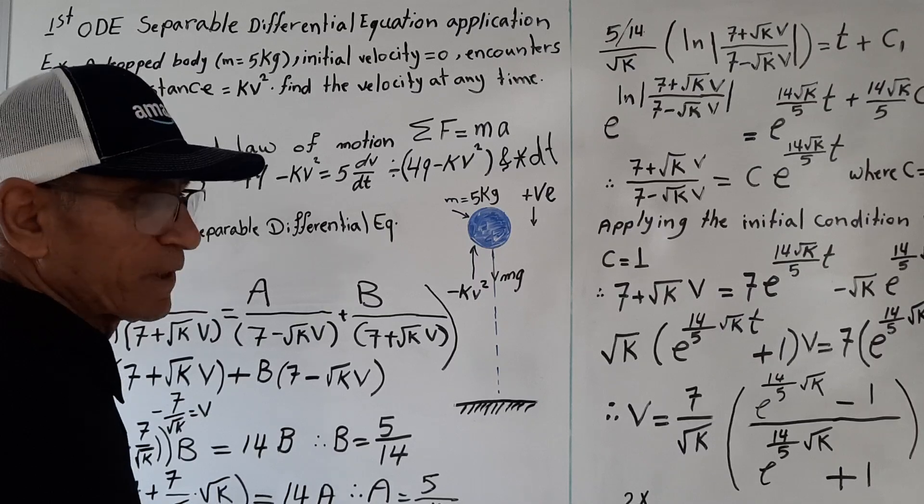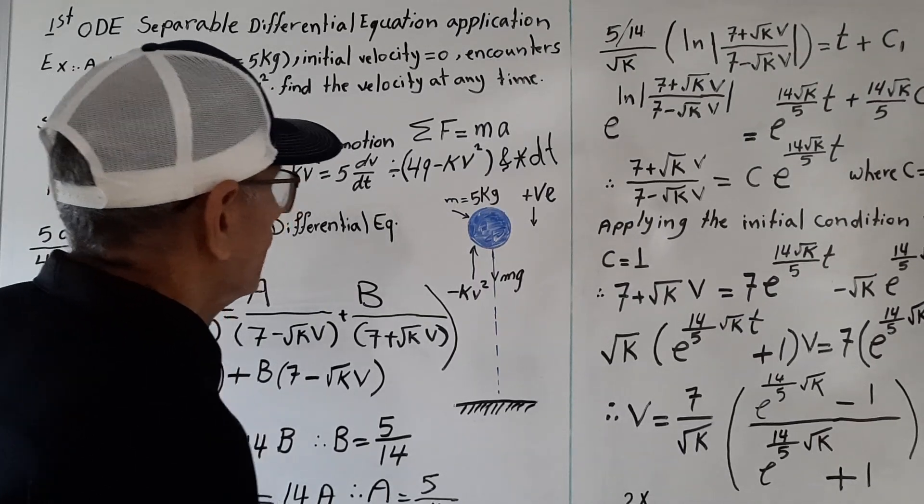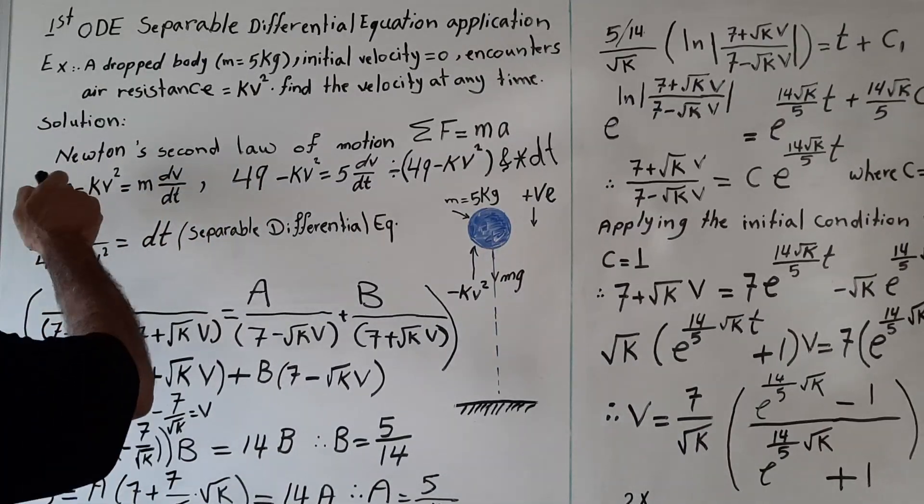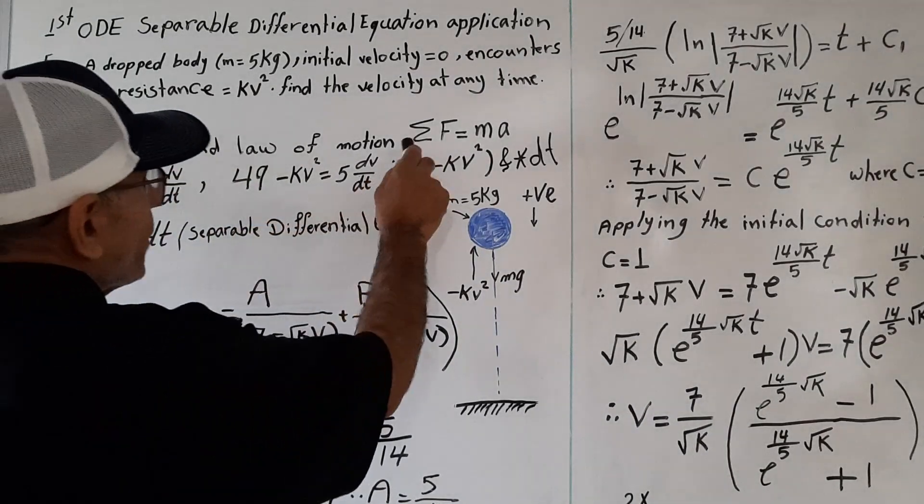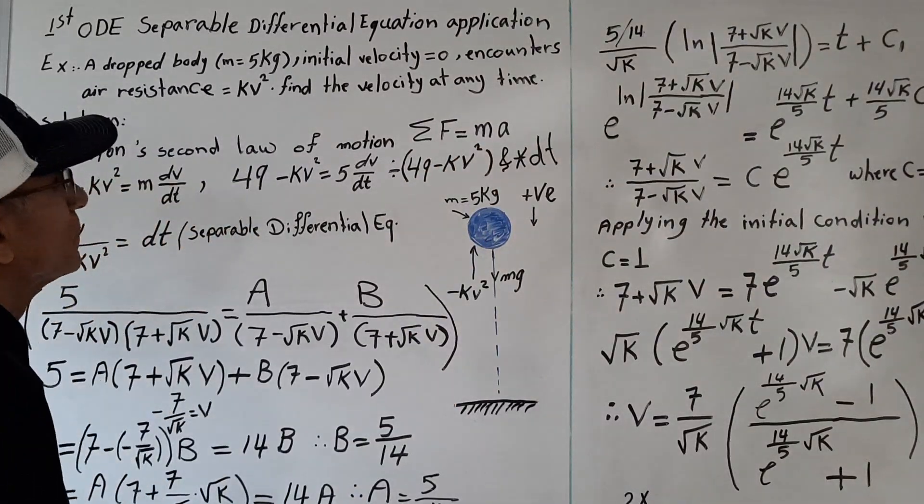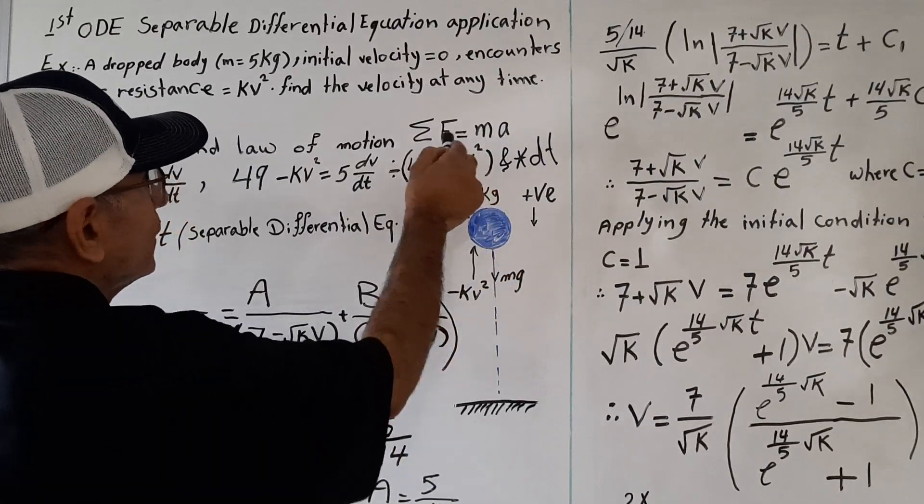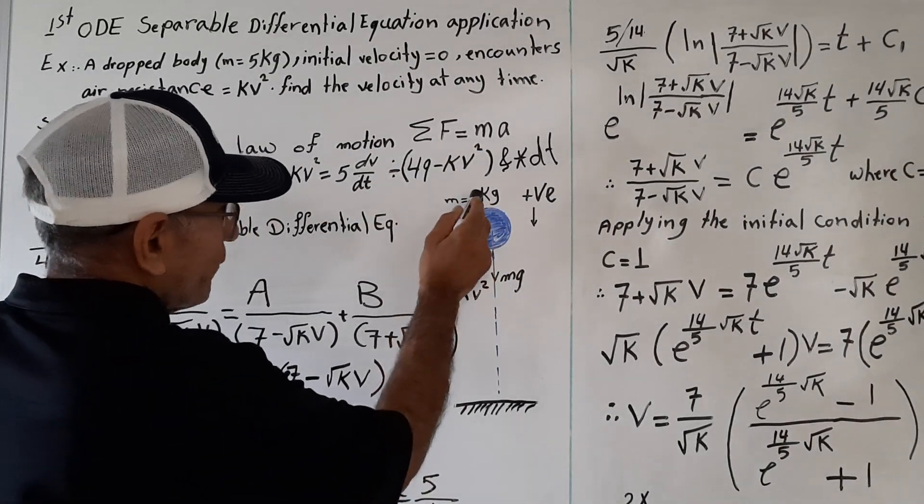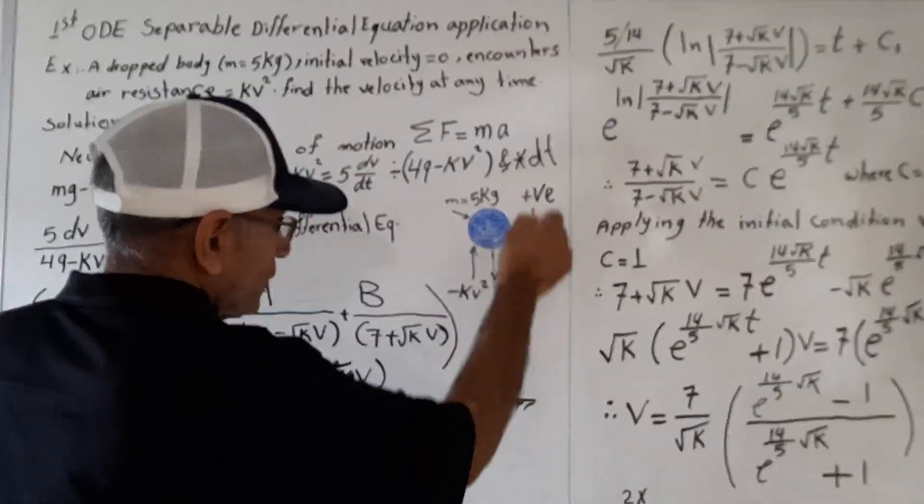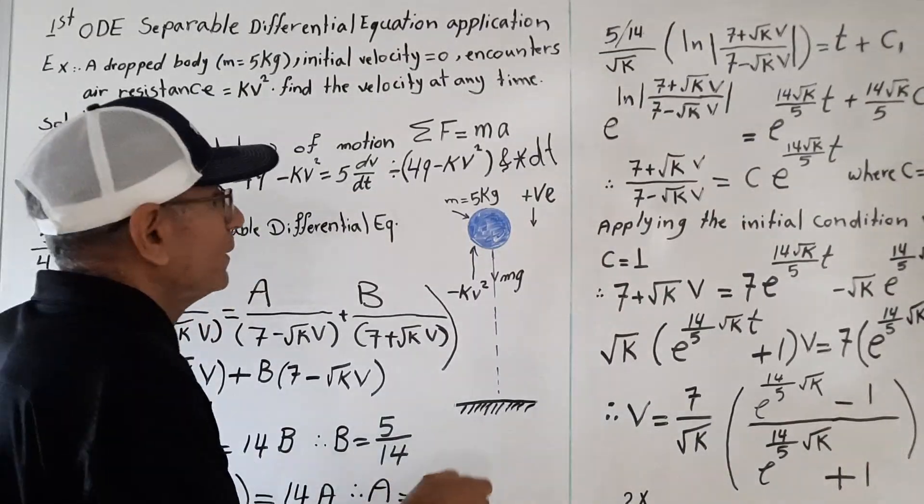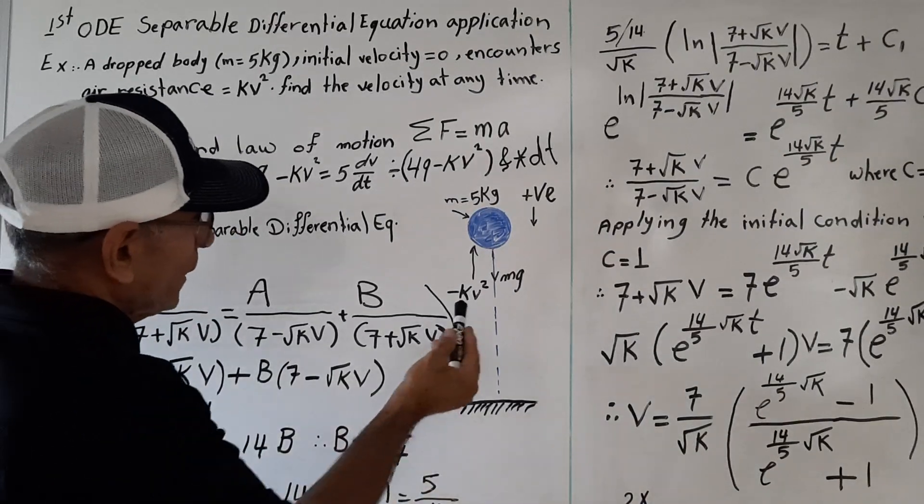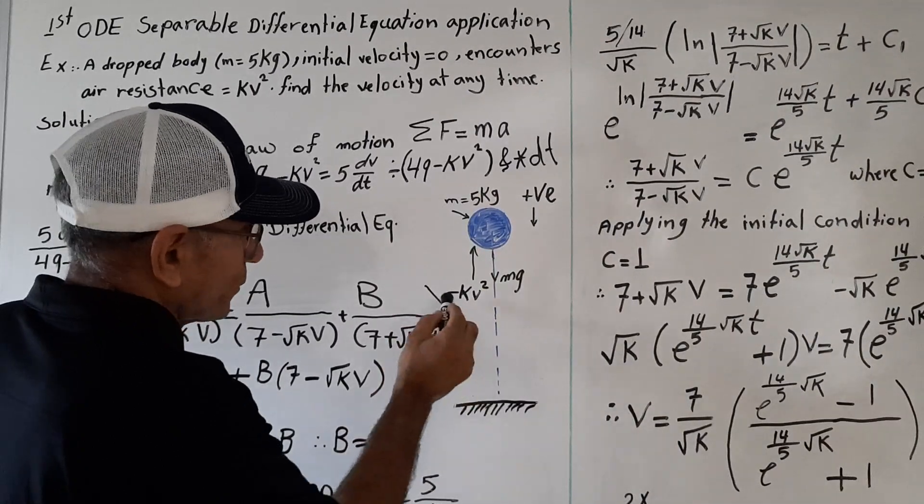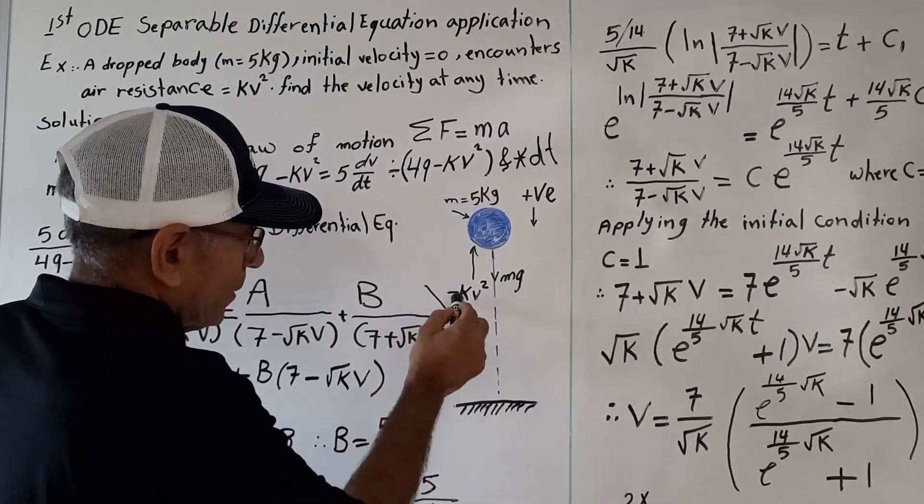Newton's second law of motion: summation of F equals ma. The forces affecting the body equal the mass of the body times the acceleration. Here is our body, five kilograms weight. This is our down, our positive direction, and this is the air resistance.